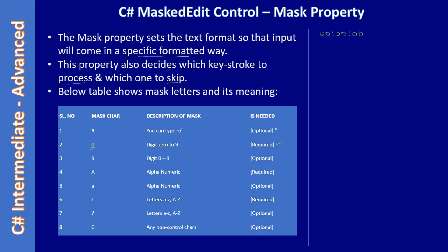So '0' means 0 to 9 and it's required. If we have '9', it still accepts 0 to 9 just like '0', but it is optional — if the user types something in the placeholder it must be 0 to 9, otherwise they can skip it. Capital 'A' is alphanumeric and required — letters a to z as well as numbers are allowed, and the user must type it. Lowercase 'a' is the same but optional.